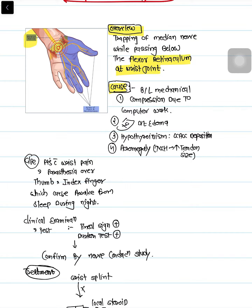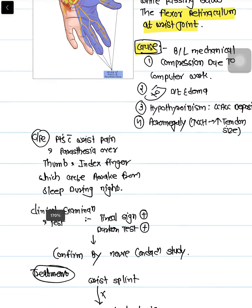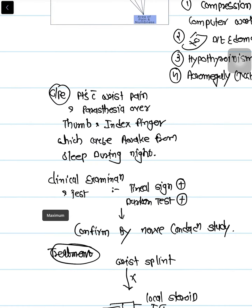Third, there is glycosaminoglycan deposition in hypothyroidism. In acromegaly, there is increased growth hormone in the adult, which causes an increase in tendon size.